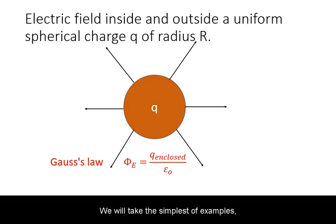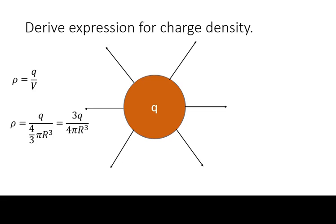We will take the simplest of examples of calculating the electric field both inside and outside a uniform spherical charge using Gauss's law. We will first define the charge density rho using the geometry of the object.